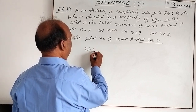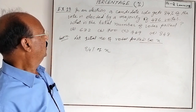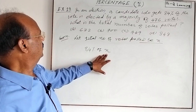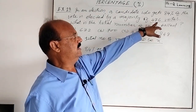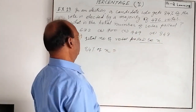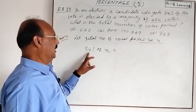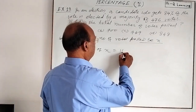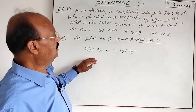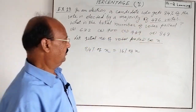The winner is getting 84 percent of total votes polled, which is X. This 84 percent of X is 476 votes more than the opponent. So if the winner is getting 84 percent, the opponent — who is the loser — will get 100 minus 84, that is 16 percent of X. The winner is getting 476 votes more as the majority.